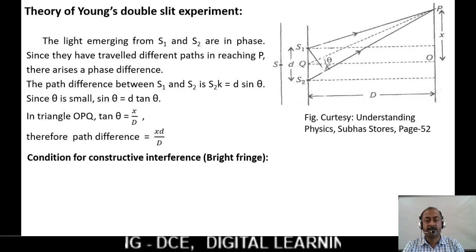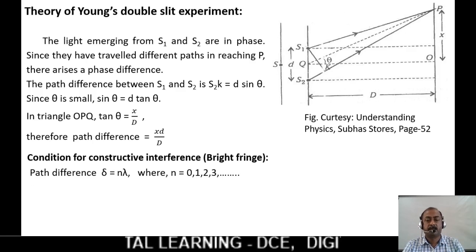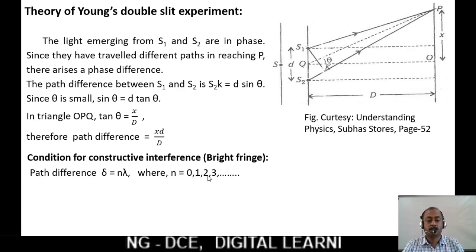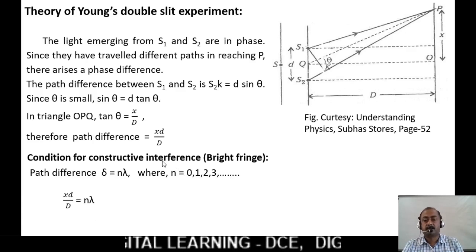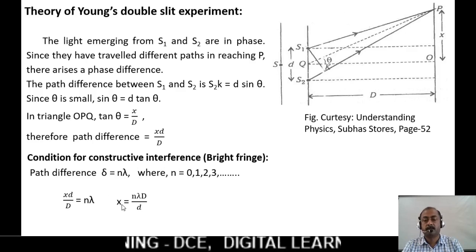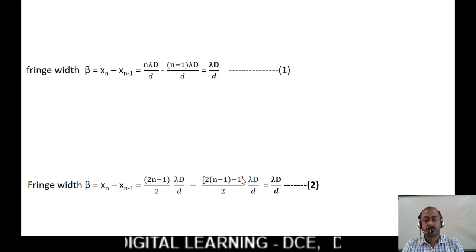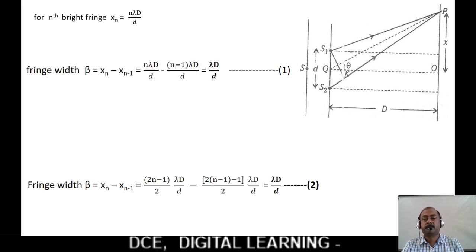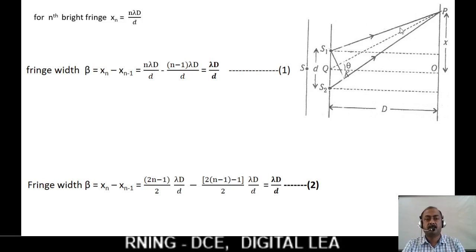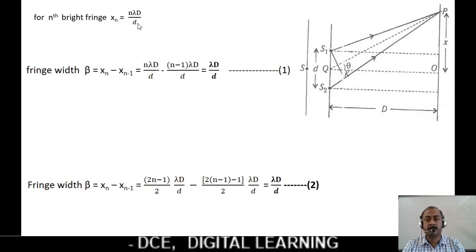The conditions for constructive interference, that is for a bright fringe: the path difference should be Δ = nλ, where n = 0, 1, 2, 3, 4, and so on. From the path difference equation xd/D = nλ, we get the position of the nth bright fringe as xₙ = nλD/d, where λ is the wavelength of light, D is the distance to the screen, and d is the slit separation.